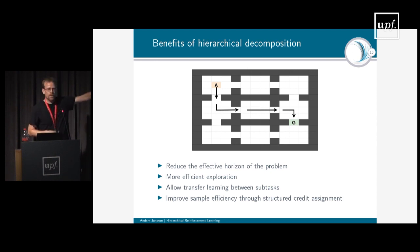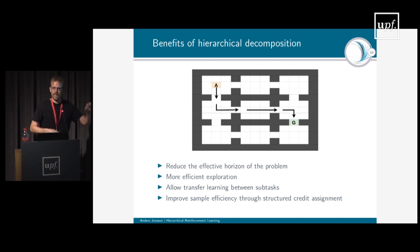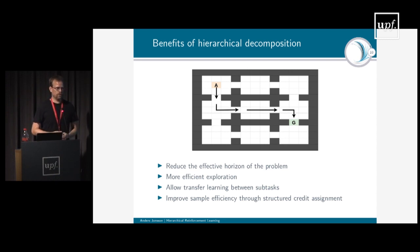Another possible benefit is that if I know beforehand that the goal state is in one of these doorways or hallways between the rooms, then exploring only by going to doorways also reduces the effective exploration space for where I have to look for the goal. So that will also make exploration much more efficient in this case.